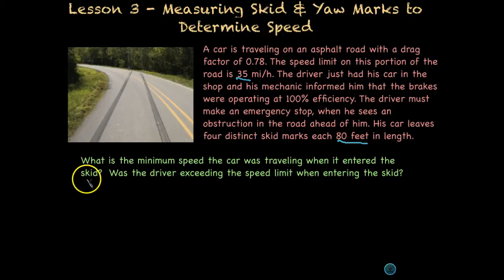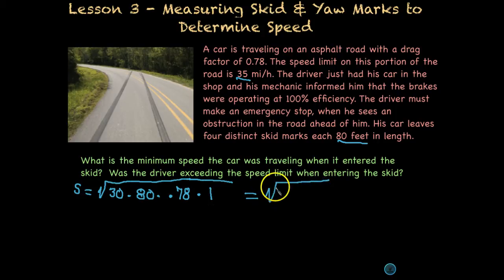Okay, well, we don't have yaw marks, we have skid marks. So we can use our formula for straight skid marks. And to find the speed, we take the square root of 30 times the length of the skid marks, which was 80, times the drag factor, which they give us as 0.78, and then times the braking efficiency as a decimal. So if it's operating at 100%, the decimal is just 1. All right, so very easy. We just need to simplify this. So I'm going to multiply everything underneath the radical, and I would get 1872. Then when I take the square root of that, I end up with 43.27 miles per hour.